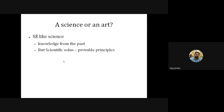However, scientific solutions are provable principles, but software engineering is not — we cannot prove it. Unlike science, software engineering does not have any provable principles. Also, software engineering can have several solutions for a particular problem. For example, for an authentication system, we can use fingerprint, face recognition, password, or PIN — different solutions for a single problem. In science, there is typically a unique solution.